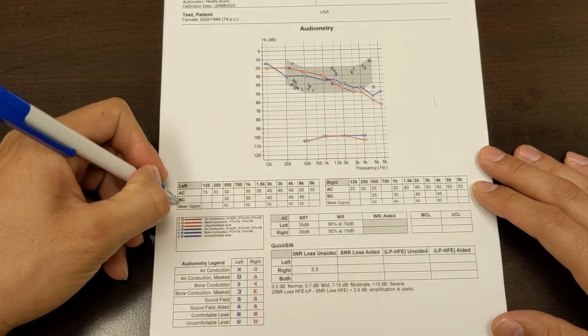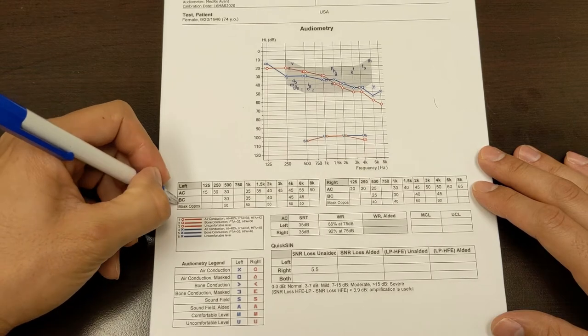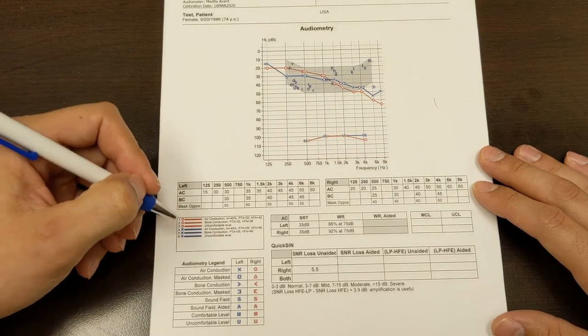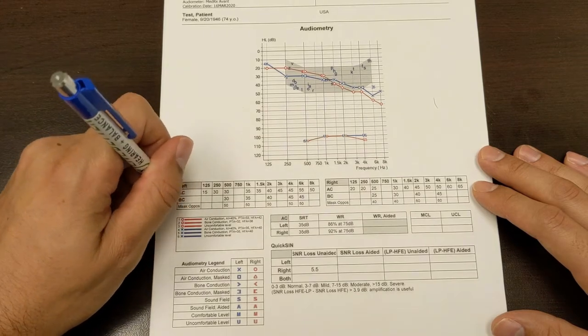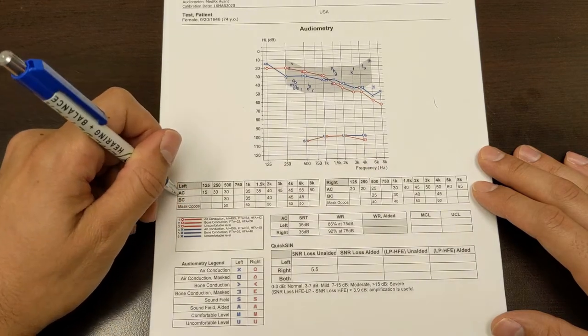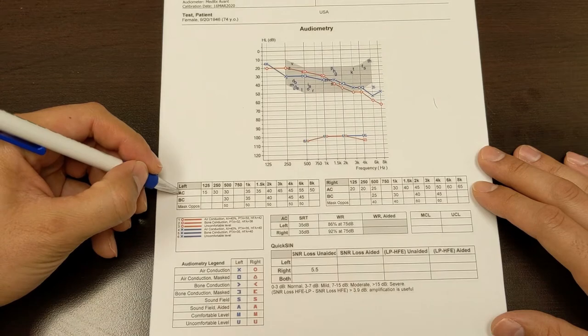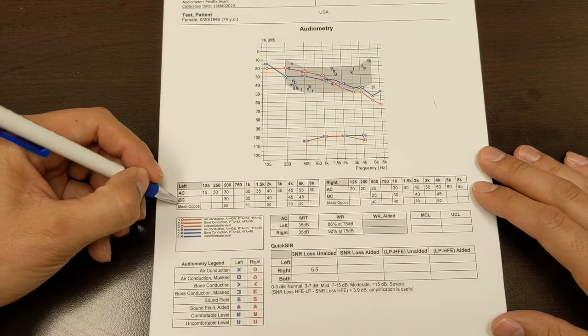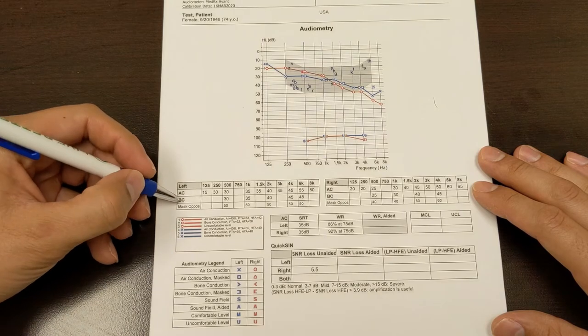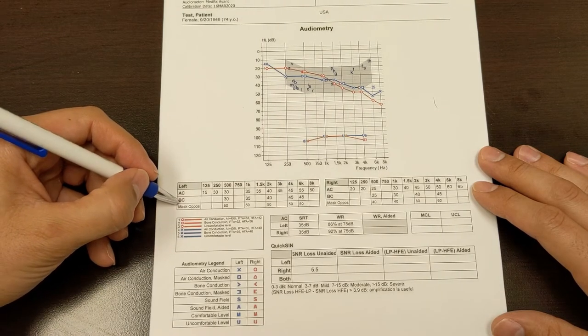But bone conduction is where we have a headband that vibrates our skull, our head, and it's vibrating our bone, our inner ear only. So these are the two different tests. One is done with an insert headphone, air conduction, and the other is done with a bone oscillator, a headband.